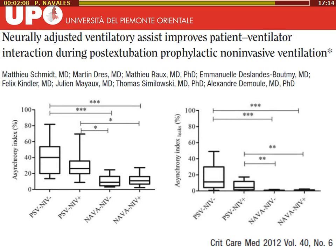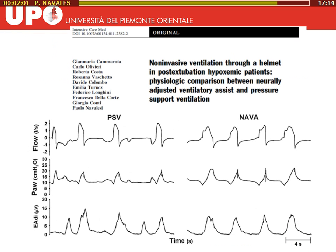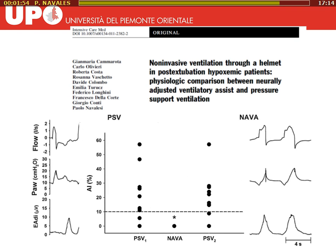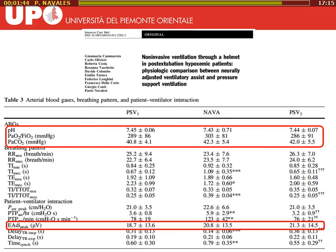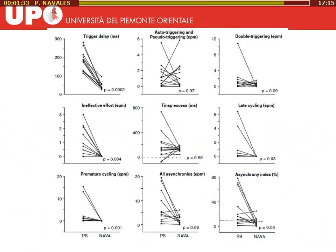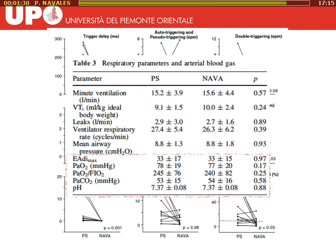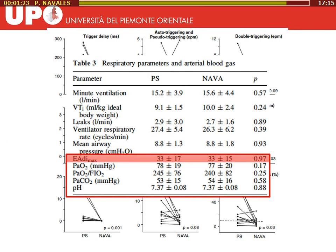We tried to compare PSV and NAVA in patients wearing a helmet and found that NAVA significantly reduced — actually zeroed in these few patients — the amount of leaks. However, arterial blood gases and the electrical activity of the diaphragm, reflecting effort and drive, were not affected. The same results — improvement in asynchrony but no change in arterial blood gas and no improvement in diaphragm electrical activity — were found in a Swiss paper published in patients with oral-nasal masks.